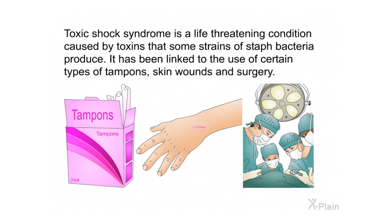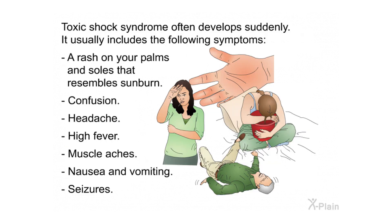Toxic shock syndrome is a life-threatening condition caused by toxins that some strains of staph bacteria produce. It has been linked to the use of certain types of tampons, skin wounds, and surgery. Toxic shock syndrome often develops suddenly and usually includes: a rash on the palms and soles that resembles sunburn, confusion, headache, high fever, muscle aches, nausea and vomiting, and seizures.